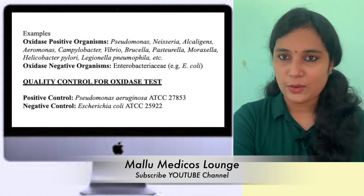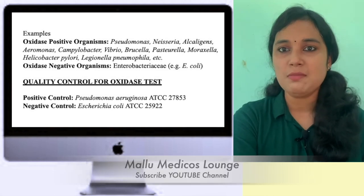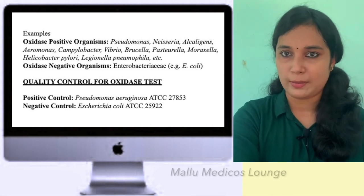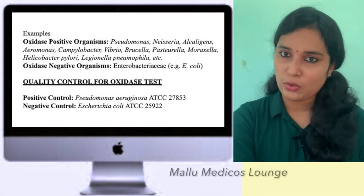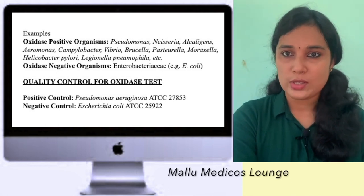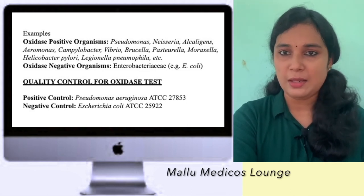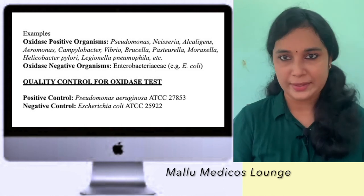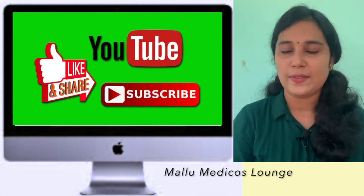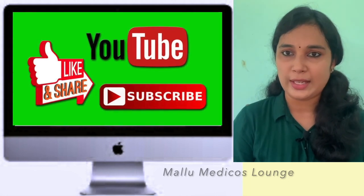Oxidase-negative organisms include all Enterobacteriaceae such as E. coli, Klebsiella, Enterobacter, Citrobacter, Serratia, and Hafnia. For quality control, the positive control used is Pseudomonas aeruginosa ATCC 27853, and the negative control is E. coli ATCC 25922.